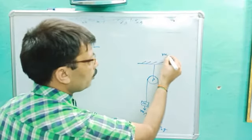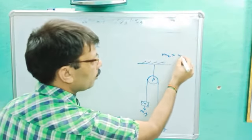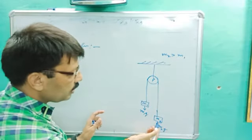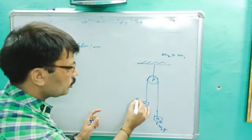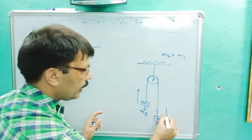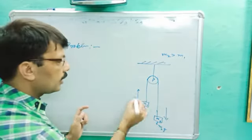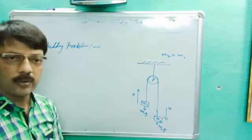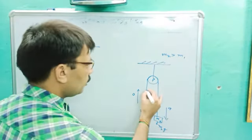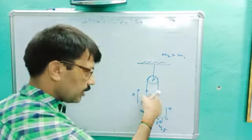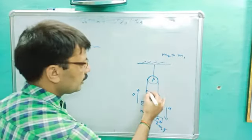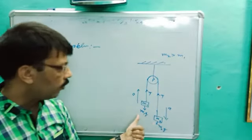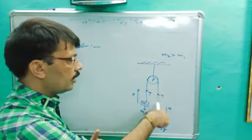If M2 is greater than M1, this body will go up and that body will come down. The acceleration will be the same for both. Tension in the string — since it is the same string — let's call it T. So two bodies M1 and M2 are connected by a string.